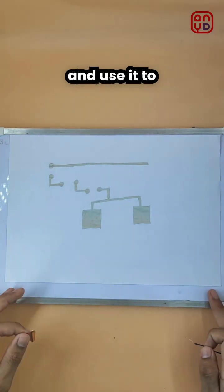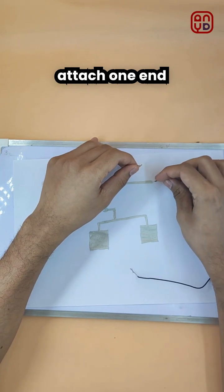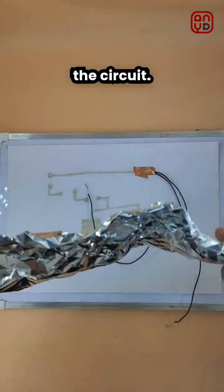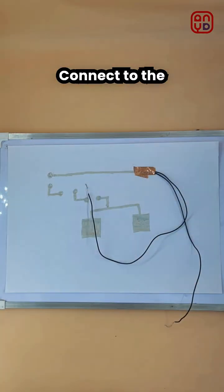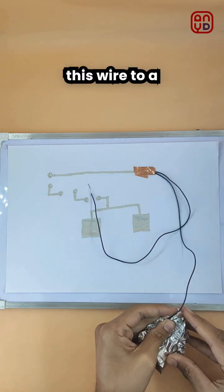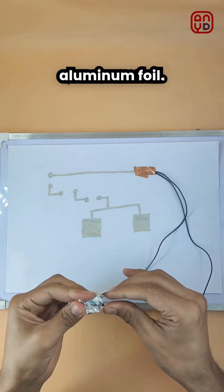Take some tape and use it to securely attach one end of the wire to the circuit. Connect the other end of this wire to a sheet of aluminum foil.